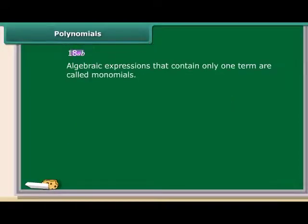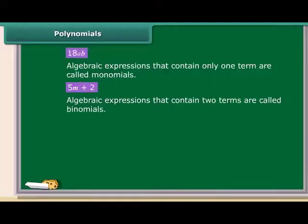Children, see this algebraic expression. It has only one term. This type of algebraic expression is called monomial. Now, is 5M plus 2 a monomial? No, it has two terms.